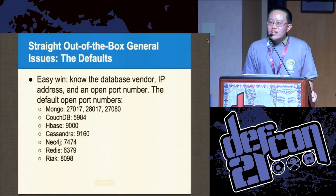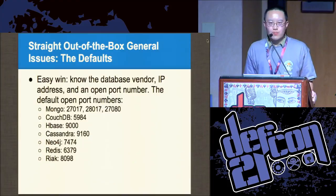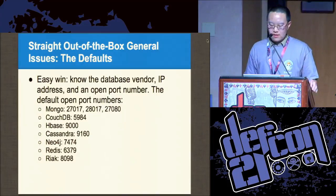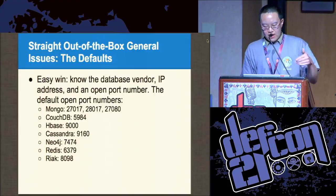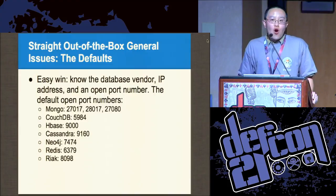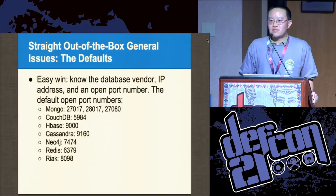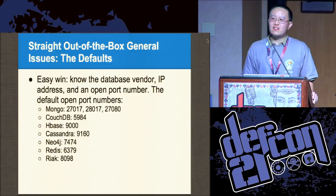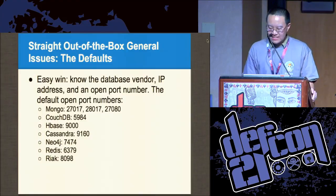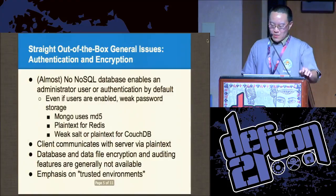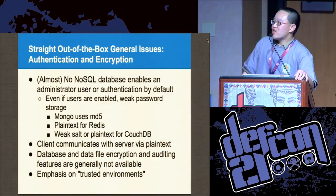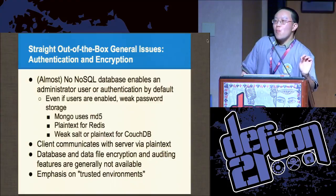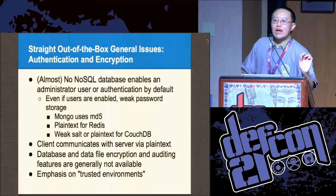A homogeneous problem — a very simple one right off the bat. If you know the database vendor, you know the IP address, you know the port number, you've almost won the game. Why? Because of authentication and encryption — it's almost nonexistent or extremely weak.